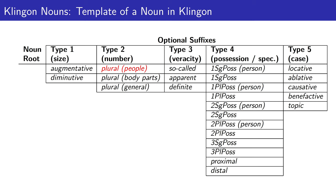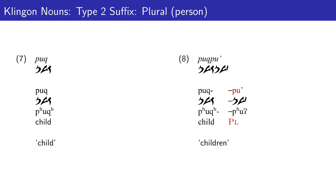Moving on to type 2 suffixes. In example 7, we have 'pok', the word for child. A child is a person, and so to mark child as plural, we use 'pu'', the type 2 suffix marking plural for a person, shown in red. Example 8 can then be glossed as children.